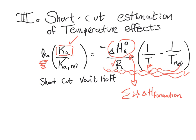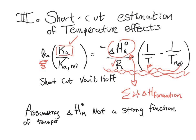So what are we assuming here in this shortcut? Because this is super convenient. This is way easier than doing all that CP integration stuff. Well, what we are assuming is that the delta H of reaction is not a strong function of temperature. And this not being a strong function of temperature comes from the CP term being same for products and reactants.